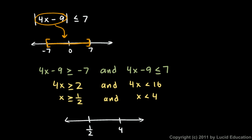Okay, which means we're going to be using square brackets here. Greater than or equal to 1 half and less than or equal to 4. You could write it as: 1 half is less than or equal to x is less than or equal to 4.